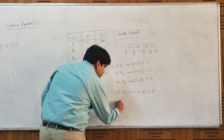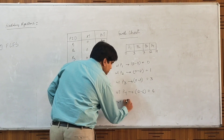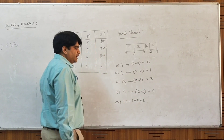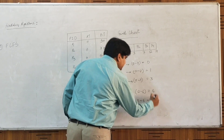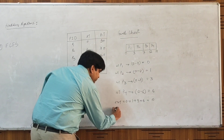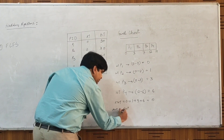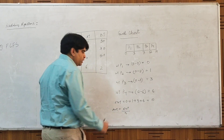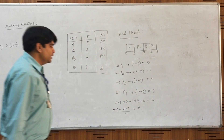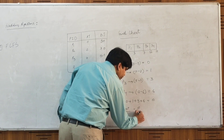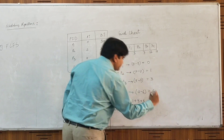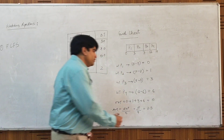The total waiting time of the system is the sum of waiting times of P1, P2, P3, and P4: 0 + 1 + 3 + 6 = 10 seconds. The average waiting time is total waiting time divided by the number of processes: 10 divided by 4 comes out to be 2.5 seconds.